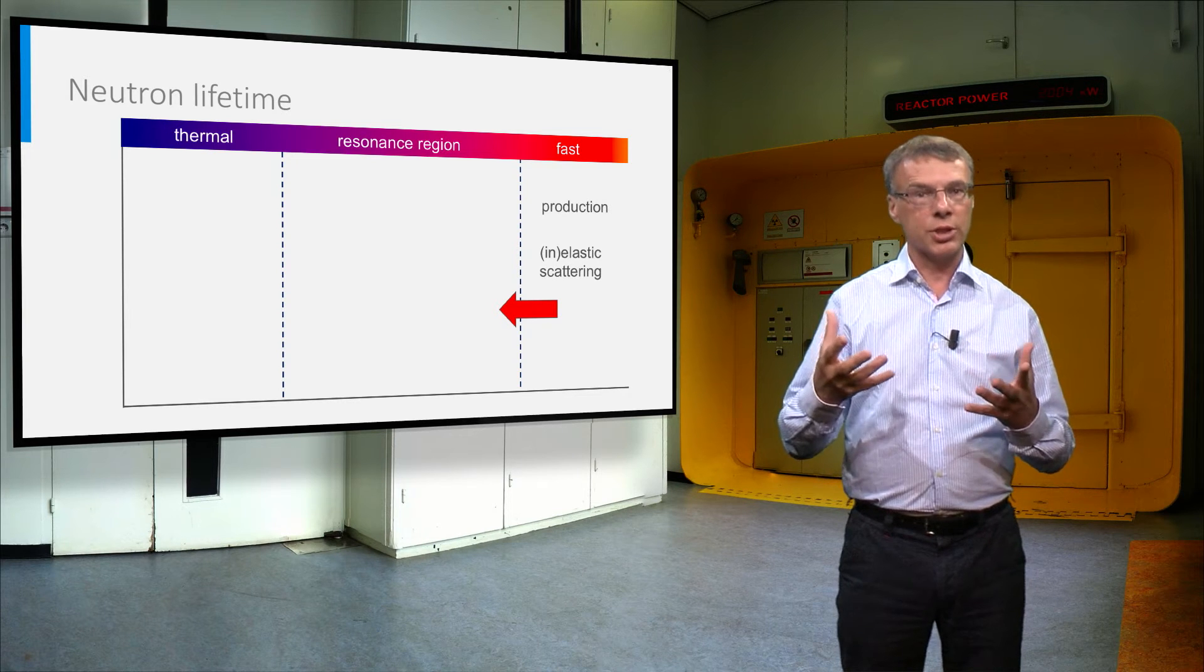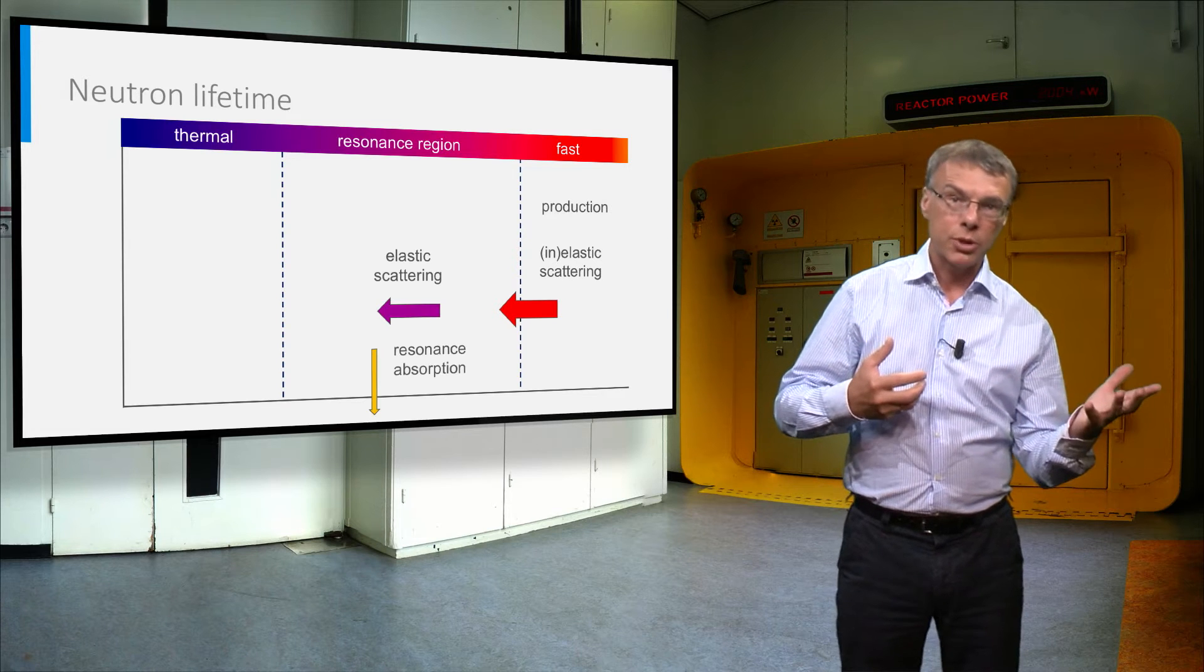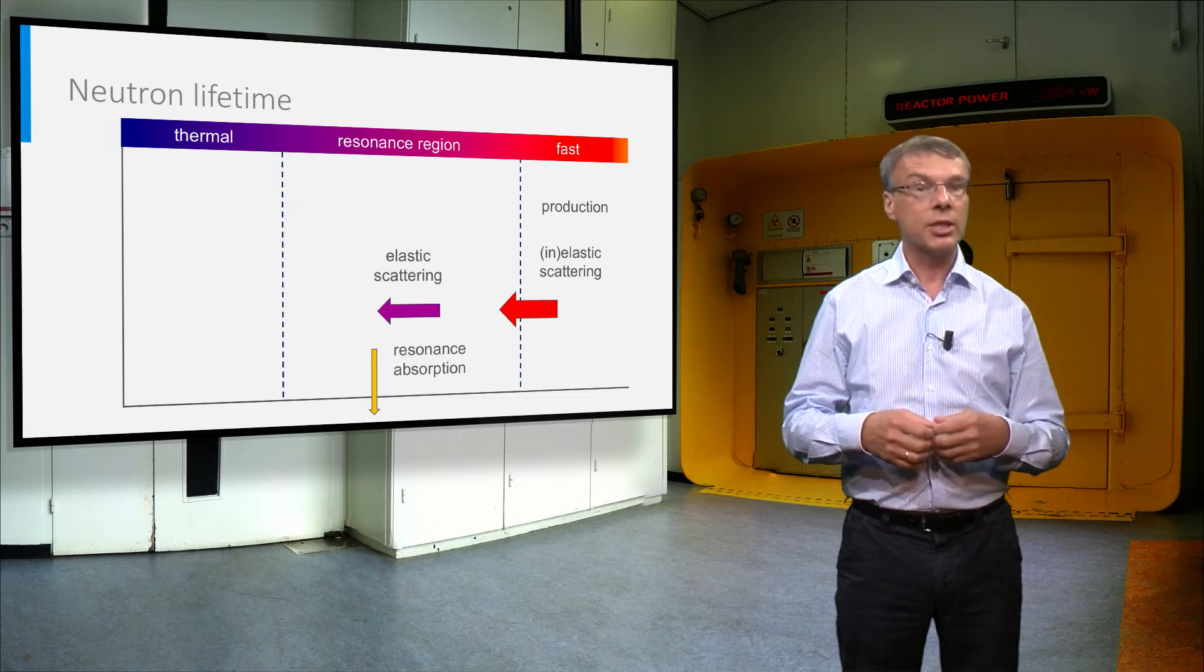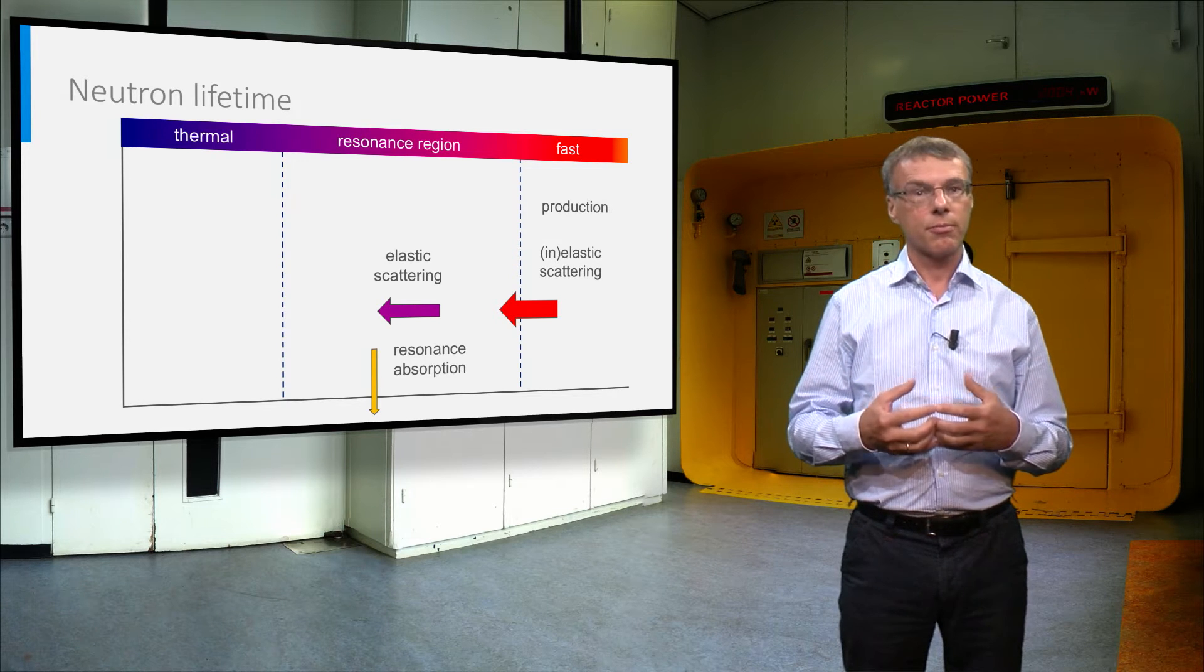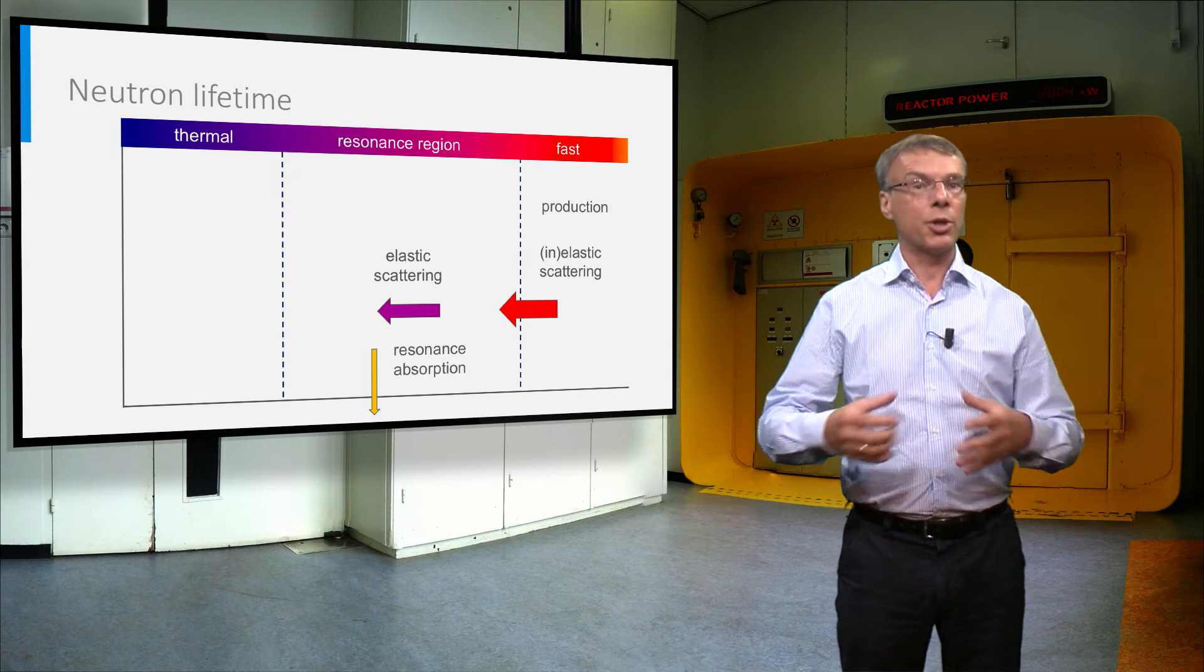Here the neutron can lose energy via elastic collisions with the moderator or it can be absorbed in the uranium-238 resonances. In the latter case, the neutron is lost for the chain reaction. Of course, this is also the case when a neutron leaks away from the reactor core.